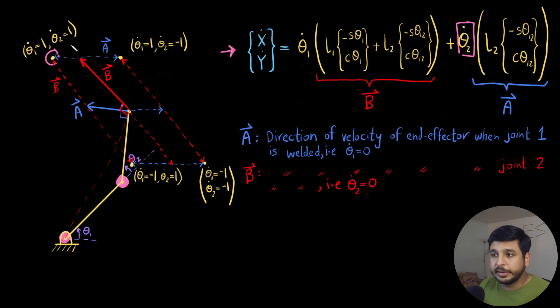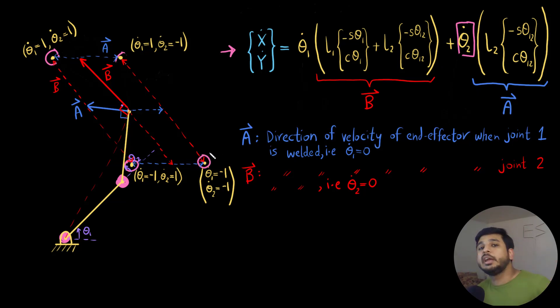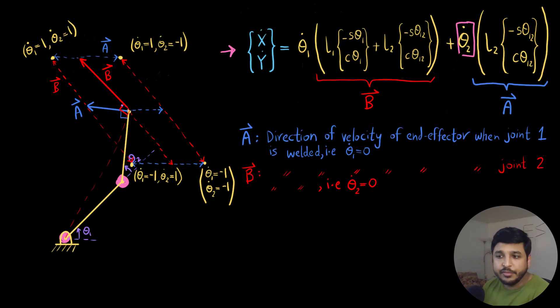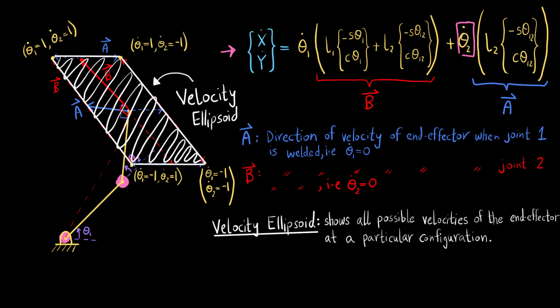For all four combinations of θ₁̇ and θ₂̇ being positive or negative one, we end up with a parallelogram. This parallelogram is called the velocity ellipsoid, and it shows all the possible velocities of the end-effector at a particular configuration — meaning at a particular position or particular values of θ₁ and θ₂.